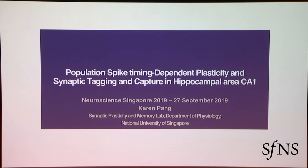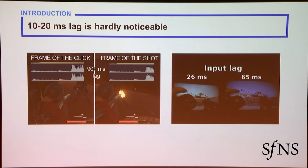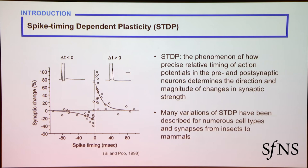I see quite a young crowd here today. I wonder how many of you are gamers? If you do play video games, you realize that if your monitor has lag of more than 60 milliseconds, it's really annoying. But if your lag is less than 20 milliseconds, you can't really tell the difference. But to neurons in the hippocampus, a 10 to 20 millisecond difference between two events could really make all the difference in terms of synaptic plasticity.